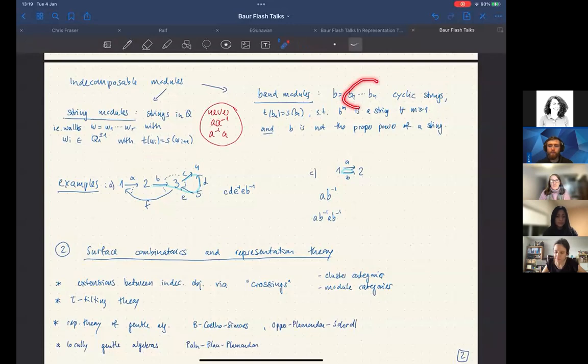The band modules are cyclic strings, so also at the end you can compose with the start, but in a way that any power of it is still a string, but it's not the proper power of a string itself. So that's the shortest possible way to go around the cyclic string.